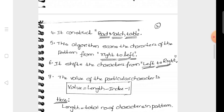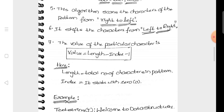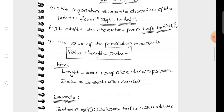In this procedure, we construct a table — this table is called a bad match table. In this algorithm, we have two things to do. First, we compare characters in the right-to-left direction, then we compare characters in the left-to-right direction, and we calculate the values in the table using a formula.